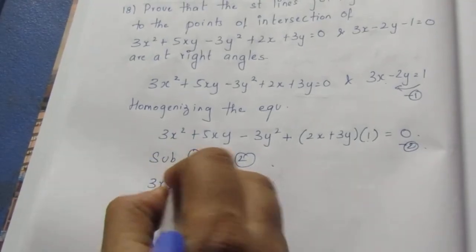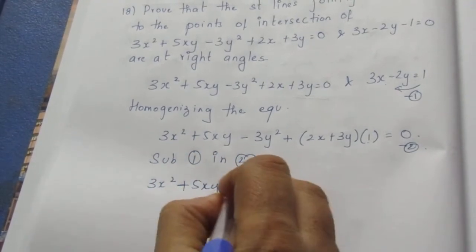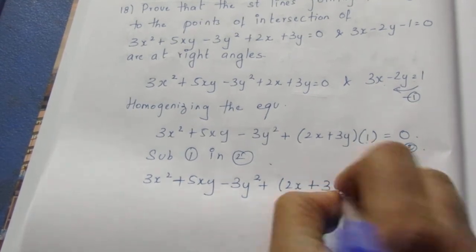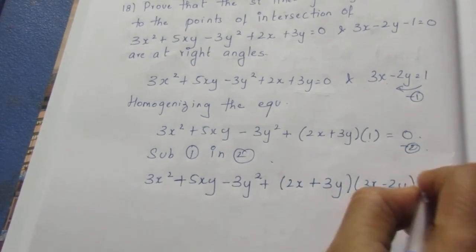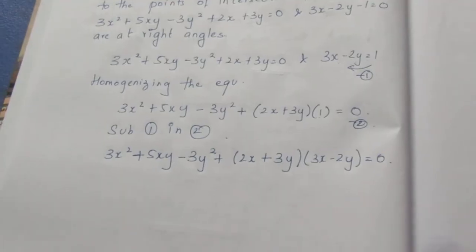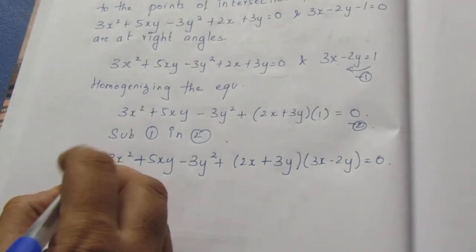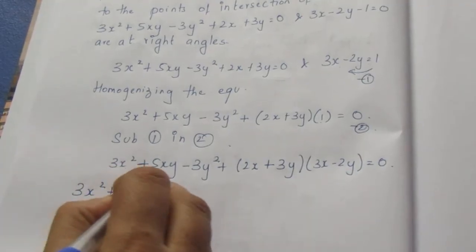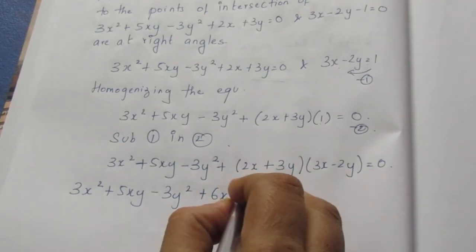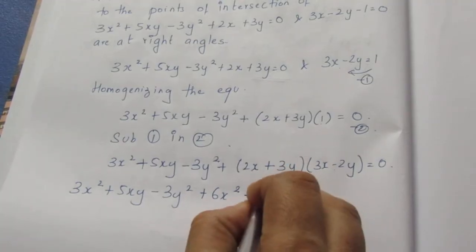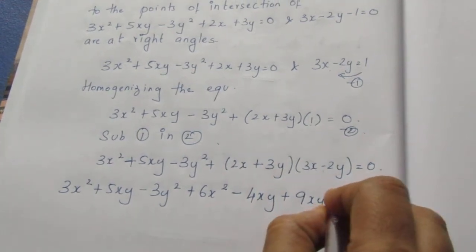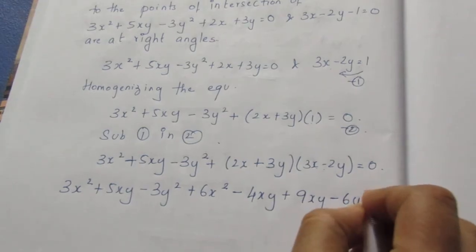After substitution, we have 3x² + 5xy − 3y² + (2x + 3y)(3x − 2y) = 0. Now we multiply out: 3x² + 5xy − 3y² + 6x² − 4xy + 9xy − 6y² = 0.